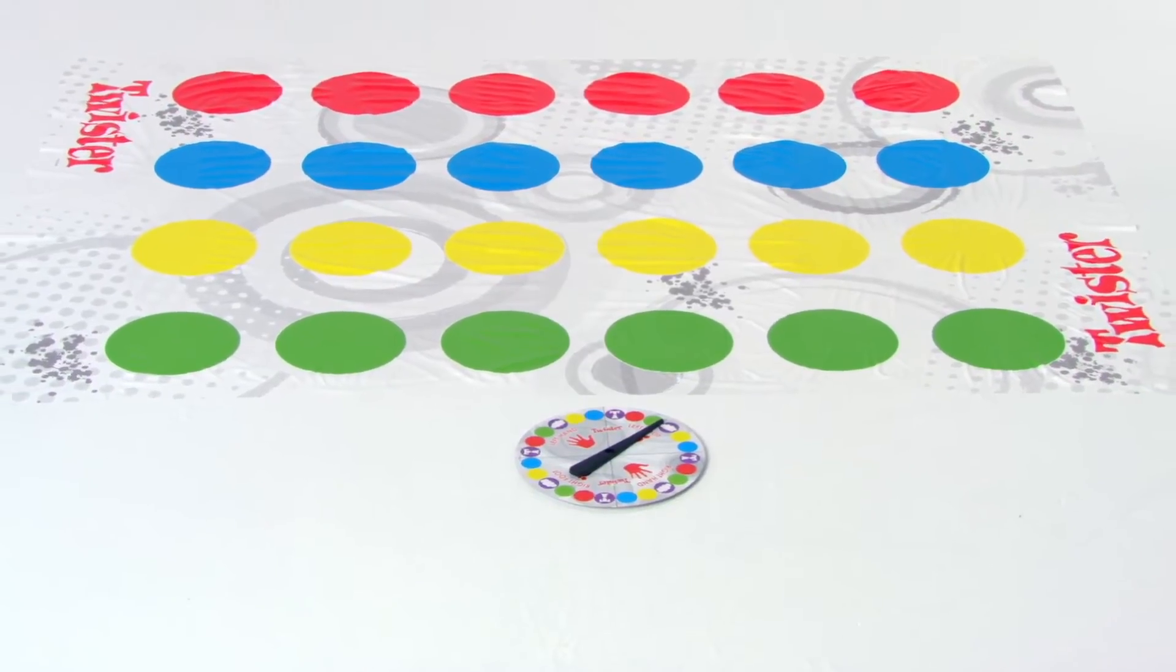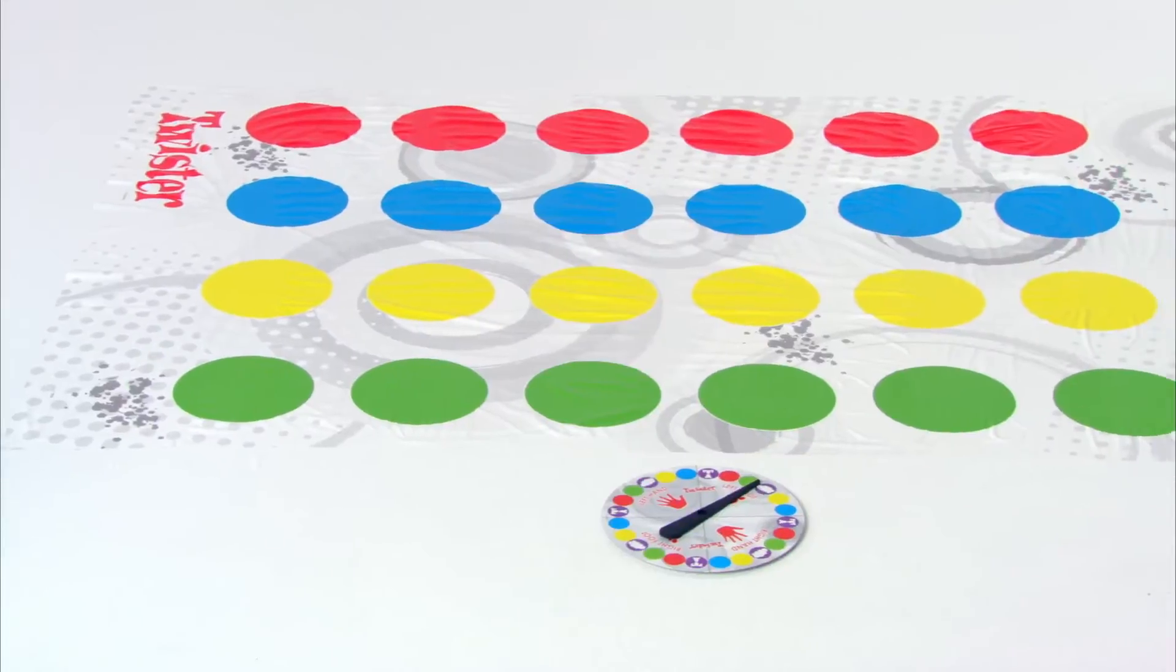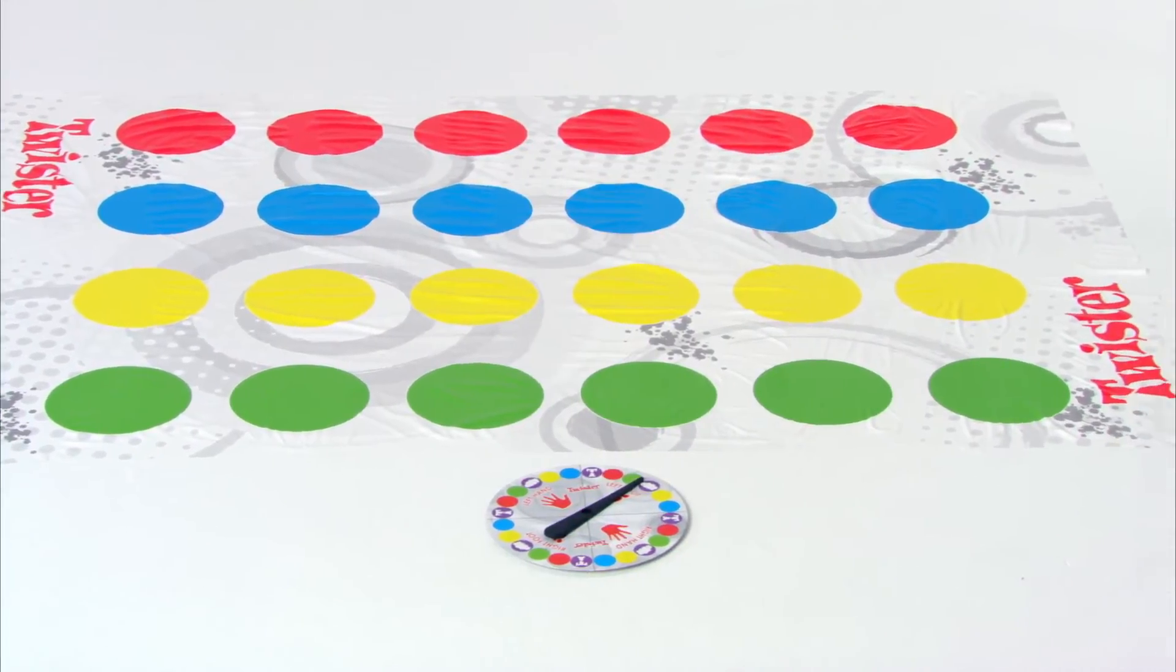Be the last player standing to win! Twister is for two or more players aged 6 and up and comes with one Twister mat, one spinner, and instructions.